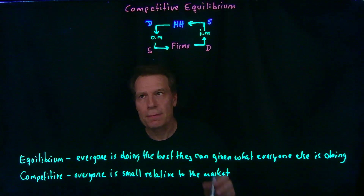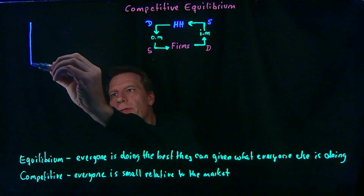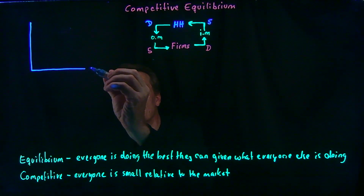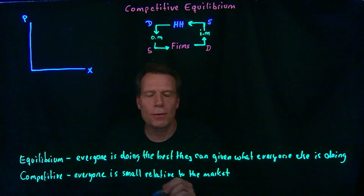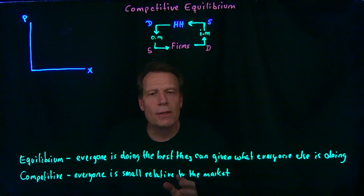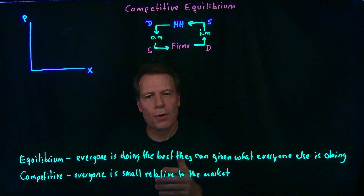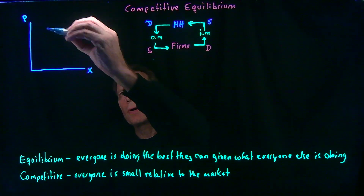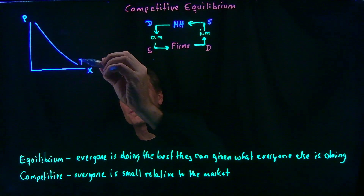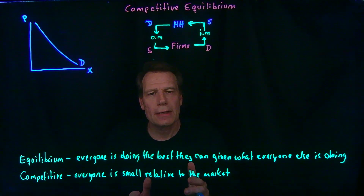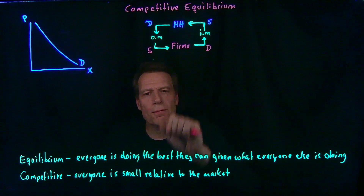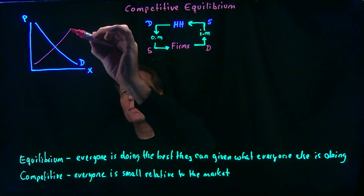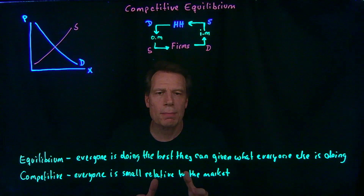Let's start with output markets. In an output market, we're focusing on a particular output for some good x. We put the price of that good on the vertical axis and the quantity on the horizontal axis. We know that demand curves come from households, so each household has a demand curve, and we can add across all of those to come up with a market demand curve. Similarly, we add up all the supply curves from firms to get the market supply curve.